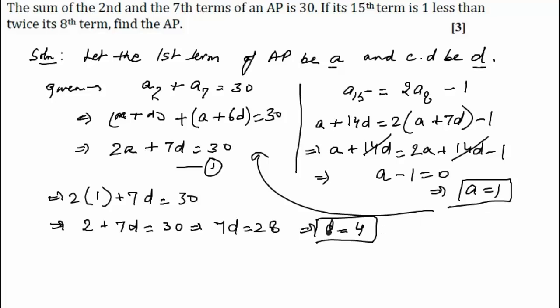So we have got a as 1 and d as 4. We need to find the AP. Therefore, the AP becomes: first term is 1, second term is 1 plus 4 equals 5, then plus 4 equals 9, and so on. Hence this is our AP, and this is the answer.